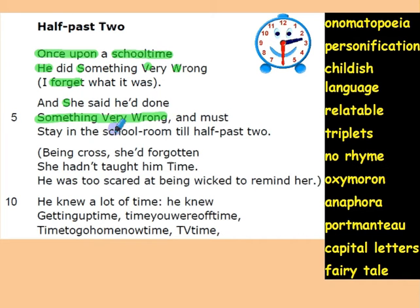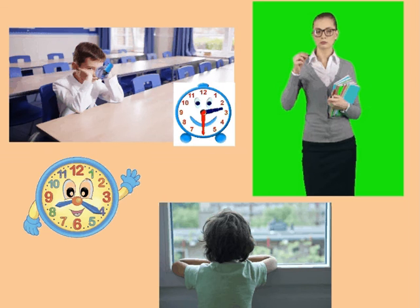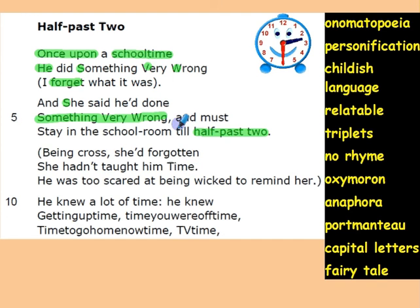'And this is why must stay in the school room till half past two.' If we go back to the picture, you can realize that he's actually got detention — he needs to stay in the classroom until half past two, while all the other students have gone. The word 'must' represents authority: you don't have any other choice. Whatever he did was really serious, which is why there's repetition and the letter is capitalized.